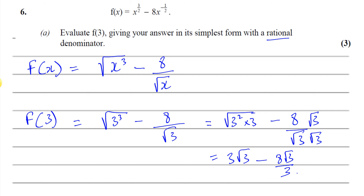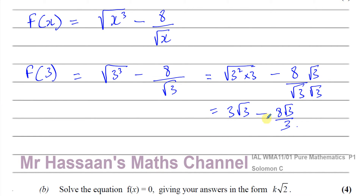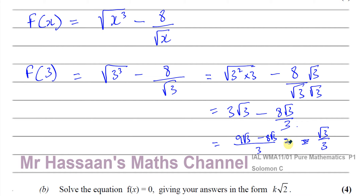This is with a rational denominator. We can leave it like this, but if we want to make it one fraction we could. That would be nine root three minus eight root three over three. These are like terms — three root three minus eight over three root three — so making the denominators the same and adding: nine root three minus eight root three, which is root three over three.